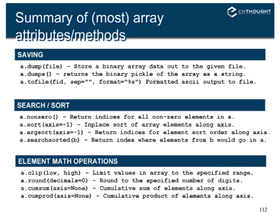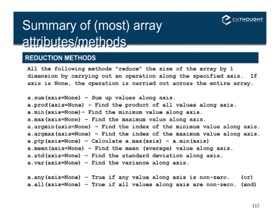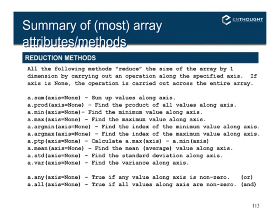Element math operations include clip and round, as well as cumulative sum and cumulative product. There are reduction operations that reduce the dimensionality of the array: calling sum with axis equal to None reduces the entire array to one value; supplying an axis reduces dimensionality by one by summing across that axis. The any and all operations: any returns true if any values along an axis are non-zero, and all requires all values to be non-zero — equivalent to a logical AND.